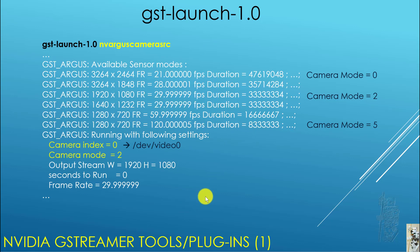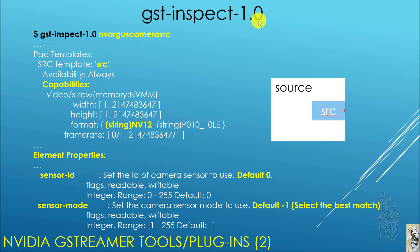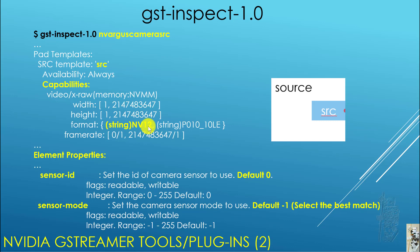gst-launch doesn't tell us much about the capabilities of nvarguscamerasrc. To find that, we use a utility called gst-inspect-1.0. When you do gst-inspect on nvarguscamerasrc, it displays a lot of information. Look for the pad template — it will say SRC pad — and right below it has capabilities: memory NVMM, width and height as the frame dimensions, format string NV12. NV12 is some kind of internal NVIDIA format — 12-bit per color channel. The frame rate can go very high.